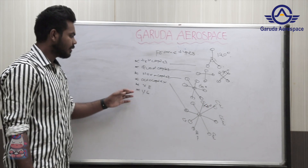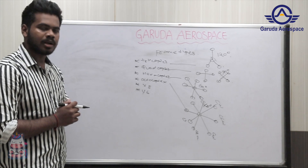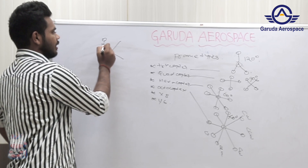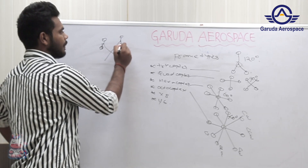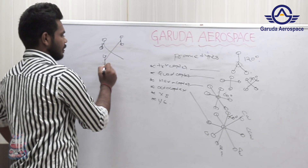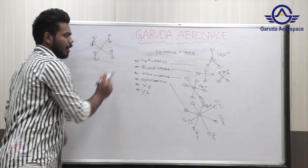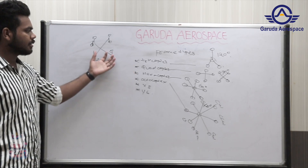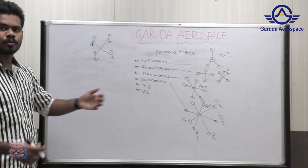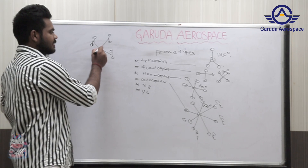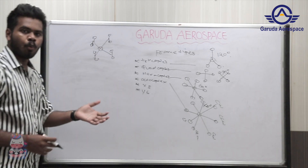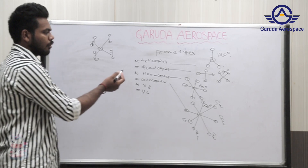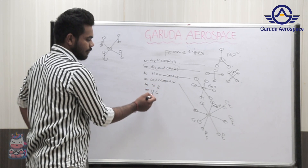What is X8? X8 is a special variant of the quadcopter — it is also a quadcopter, but one motor will be connected at the front side and one motor at the back side of each arm. In X8 we can lift more payload, so the redundancy of the machine will be increased compared to the standard quadcopter.